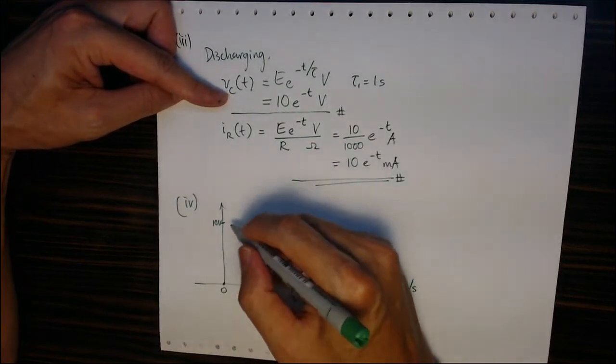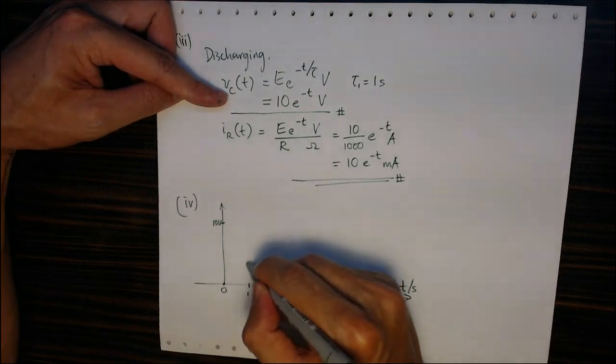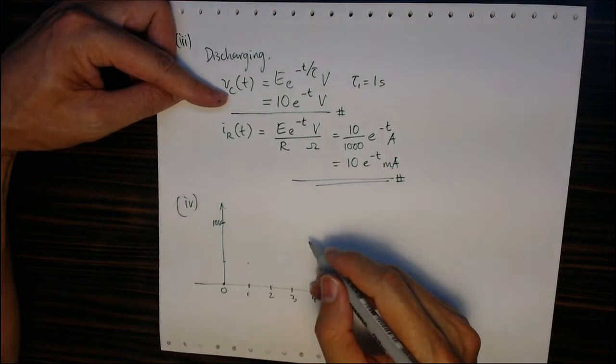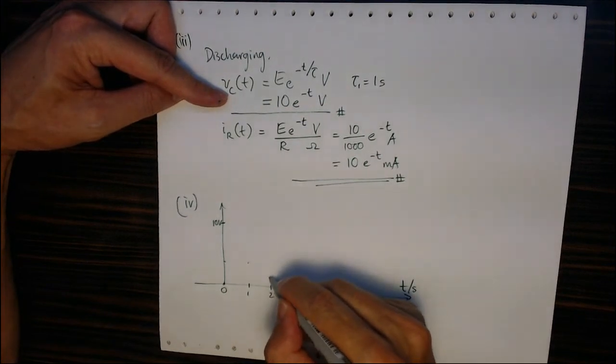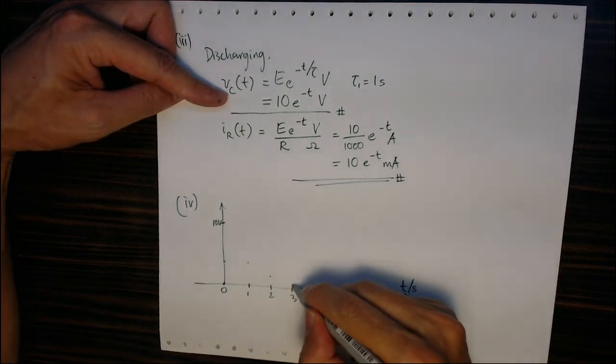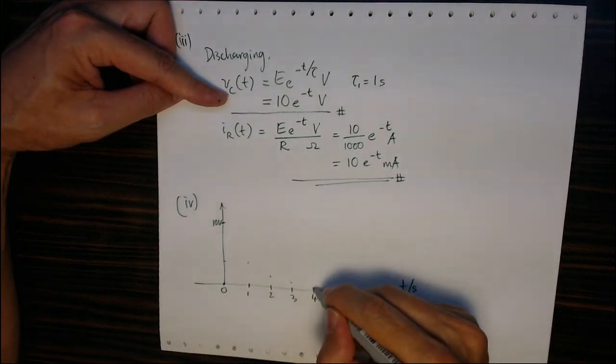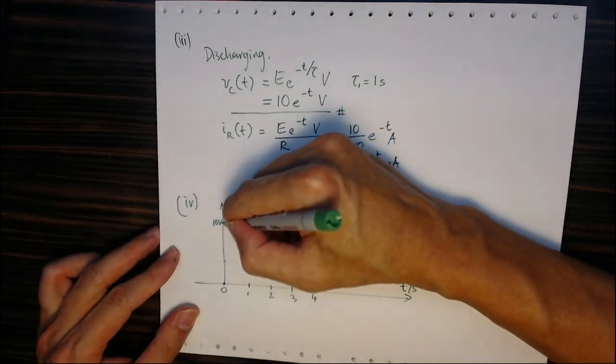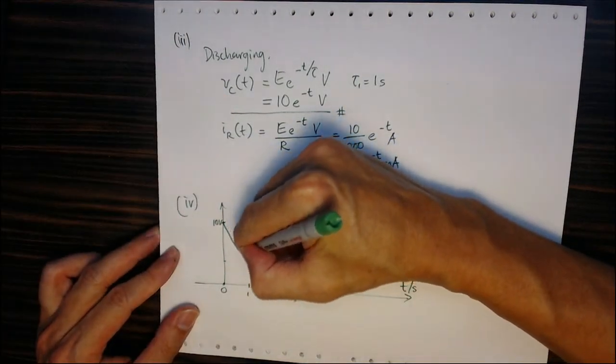One second later, the voltage drops to about 3.7 volts. One more second later, it drops to 1.3 volts, then to 0.49, then 0.18, and finally approaches zero. The waveform follows an exponential decay curve like this.